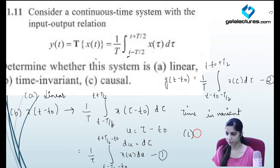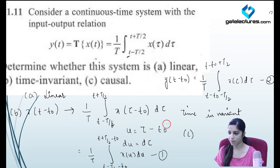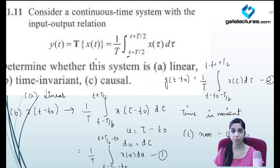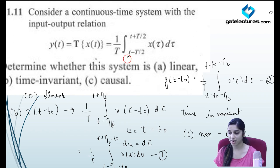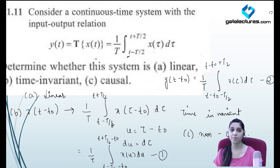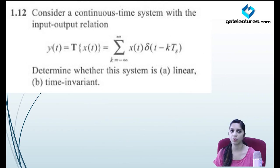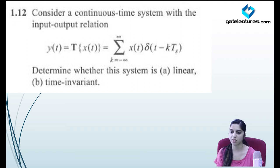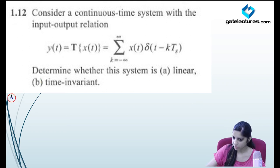Shifting the output y(t − t₀) gives (1/T)·∫_{t−t₀−T/2}^{t−t₀+T/2} x(τ) dτ, which matches the shifted-input result. Since both equations are equal, the system is time invariant. However, the integration limits span from t − T/2 to t + T/2, which includes future values of the input (t + T/2 > t), so the system is non-causal.